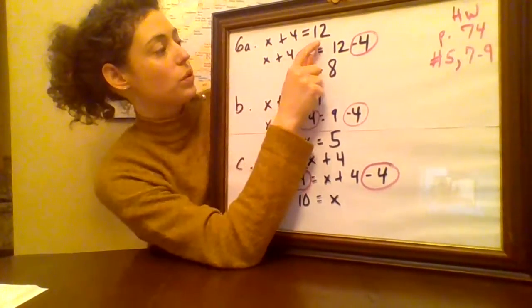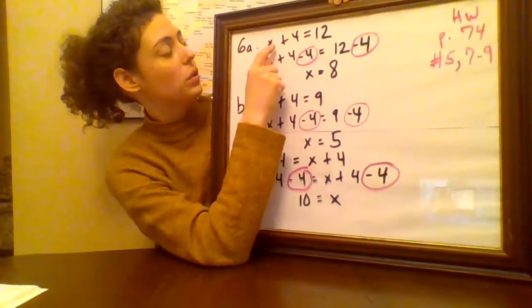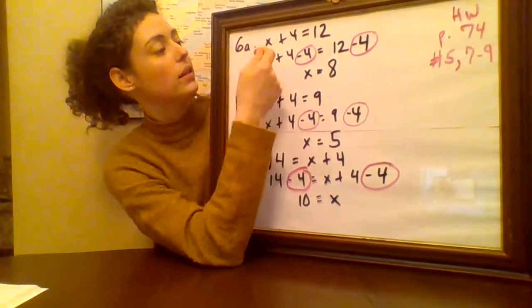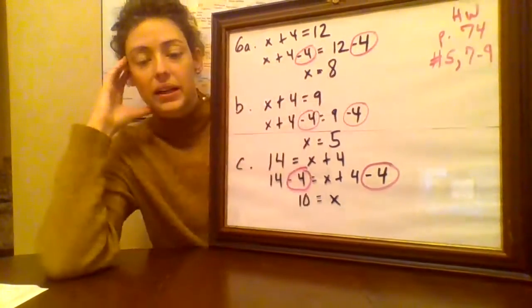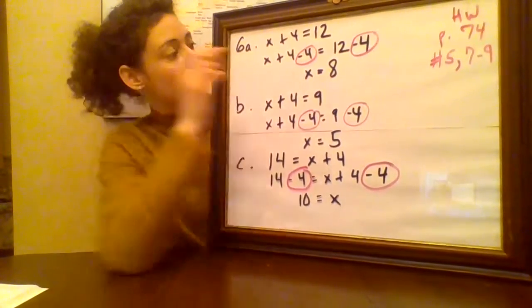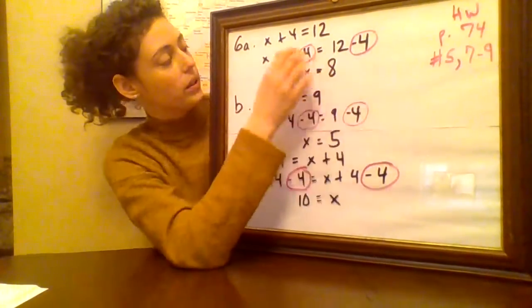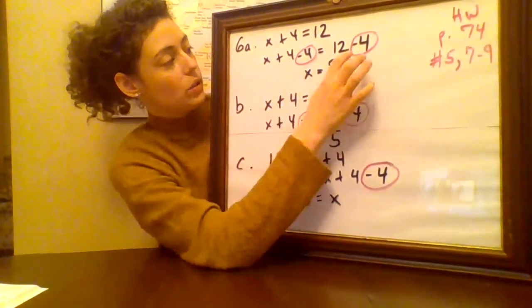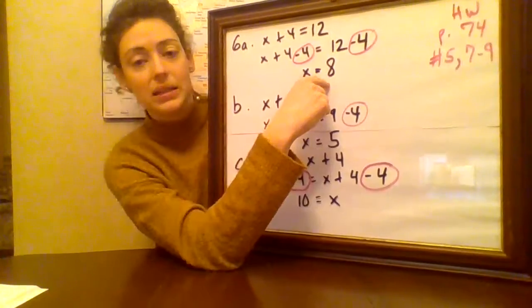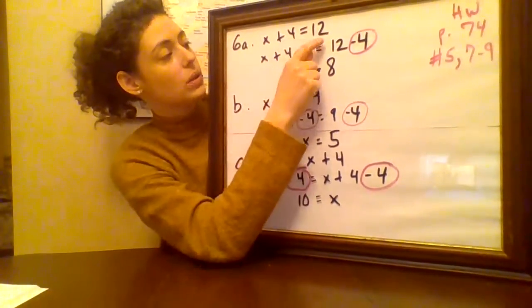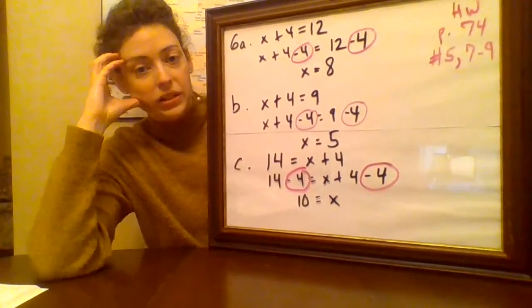This is number six on page 74. So x plus four equals 12. So what we're really thinking is what number would be x to make this sentence true? We want to get this x alone. So what we can do is take four away from this side and four away from this side. Whatever you take away from one side, you have to take away from the other side to make it still equal. So we'll say minus four here, minus four here. So x plus four minus four is x. Twelve minus four is eight. So eight is x. Let's check: is eight plus four equal to 12? Yeah, so that's good.